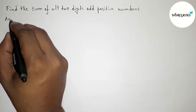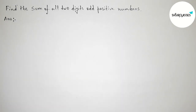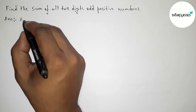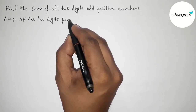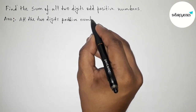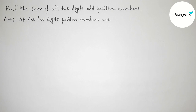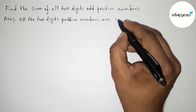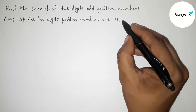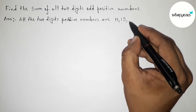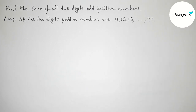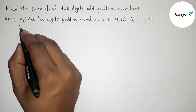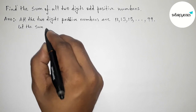First, let us solve this problem. We have to write all the two-digit odd positive numbers. The first two-digit odd positive number is 11, then 13, then 15, and so on — continuing up to the last one, which is 99. So these are all the two-digit odd positive numbers.